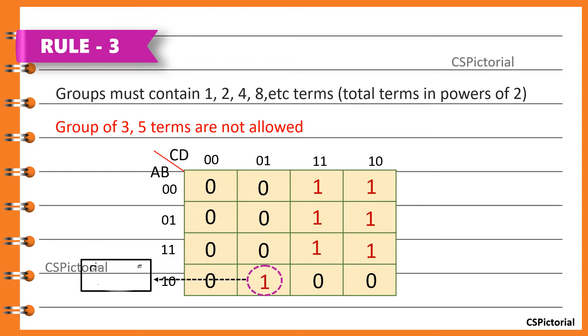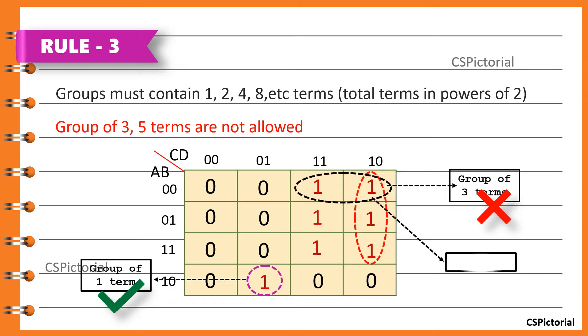Here, this is the group of only 1 term because there are no adjacent cells containing a 1, so this is allowed. This group contains 3 terms and it is not allowed. This is a group of 2 terms called a pair. It is allowed. Again, this is a larger group of 4 terms called a quad. It is also allowed. Similarly, you can also make an even larger group of 8 adjacent cells.